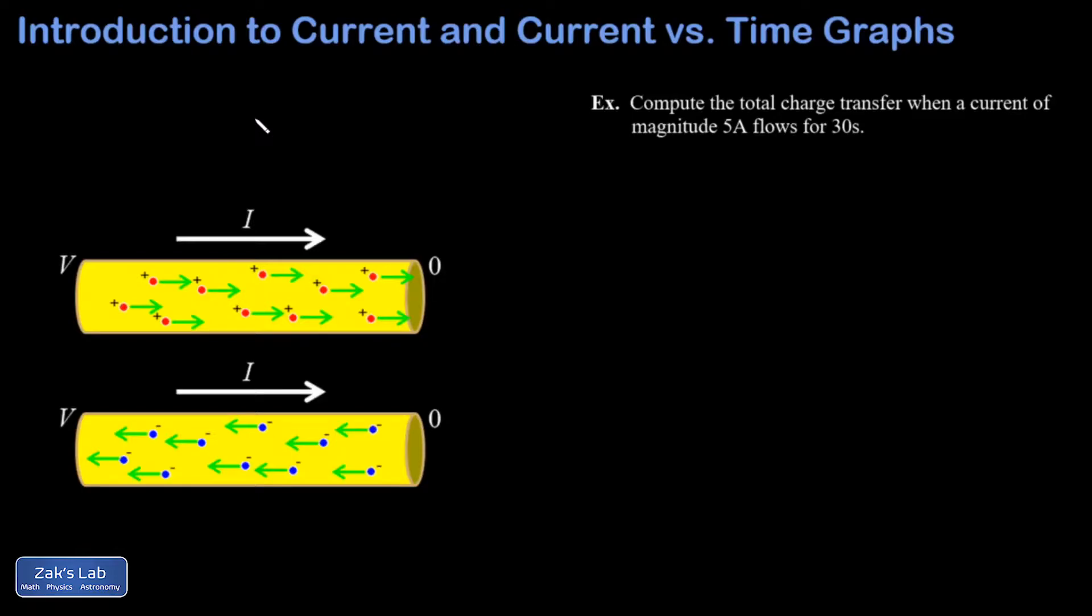So when you apply a potential difference across a wire, charge begins to flow, and current is the rate of charge flow. Current tells me how much charge passes through the conductor for a given amount of time. The units of current are coulombs per second, and that gets a special name—it's called an ampere or an amp.